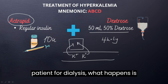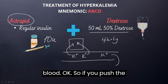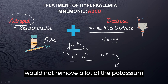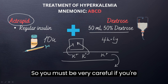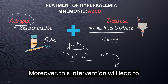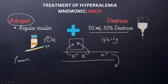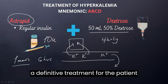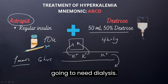So if you take the patient for dialysis, what happens is that the dialysis is rather going to remove the potassium that is in the blood. So if you push the potassium into the cells, the dialysis will not remove a lot of the potassium, and this can lead to what we call post-dialysis rebound hyperkalemia. So you must be very careful if you are repeating the insulin doses quite a lot. Moreover, this intervention will lead to a reduction in the potassium by around 1 mmol, and this may last for about 6 hours. So as you can see, this is not a definitive treatment — at some point, the patient with severe hyperkalemia is still going to need dialysis.